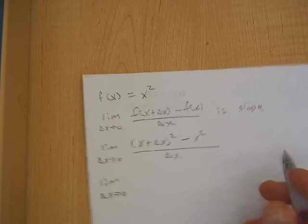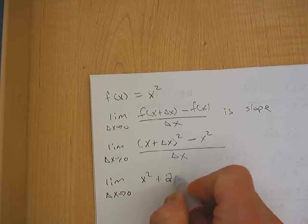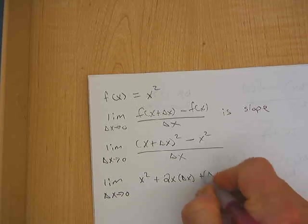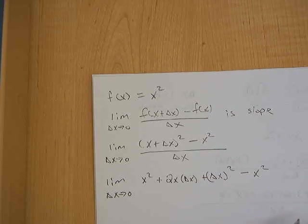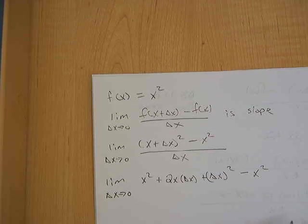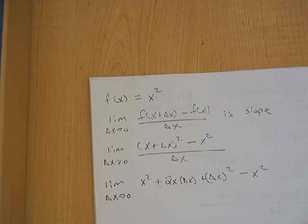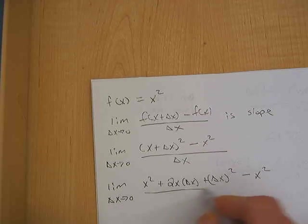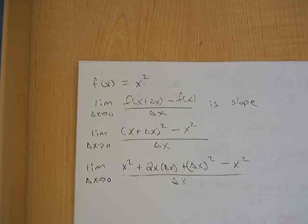Do not drop your limit notation. x plus delta x squared is going to be x squared plus 2x delta x plus delta x squared. And we've got to subtract off of that x squared. And all of that is divided by delta x.